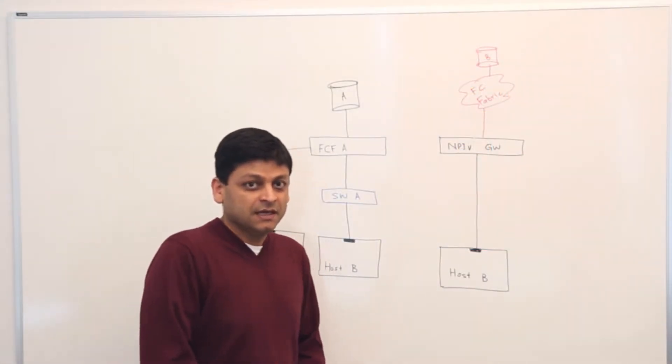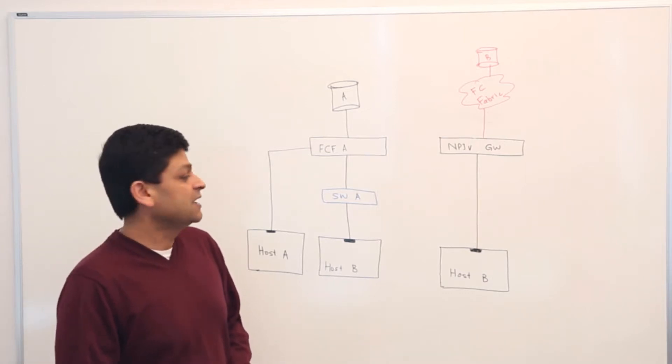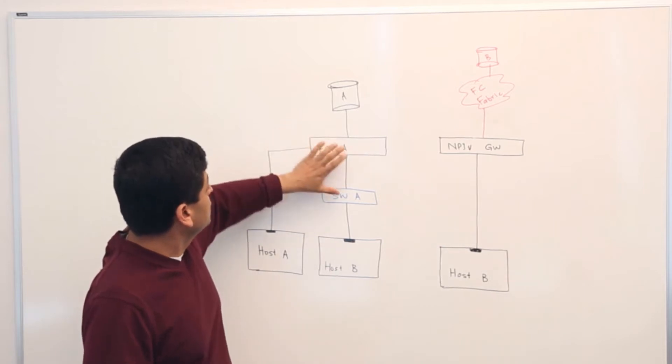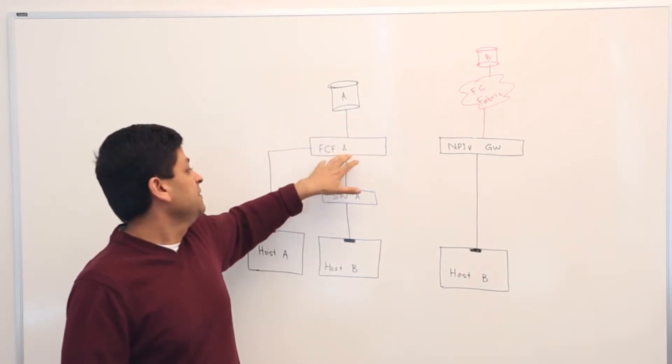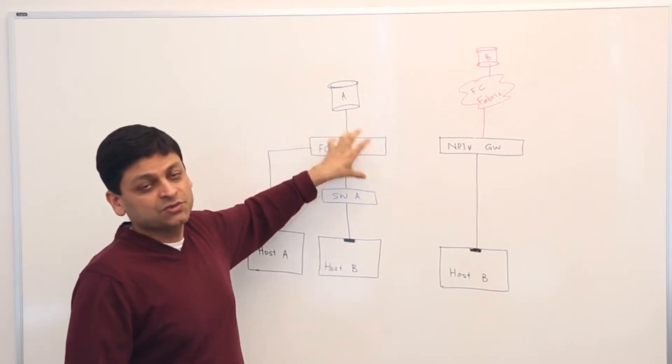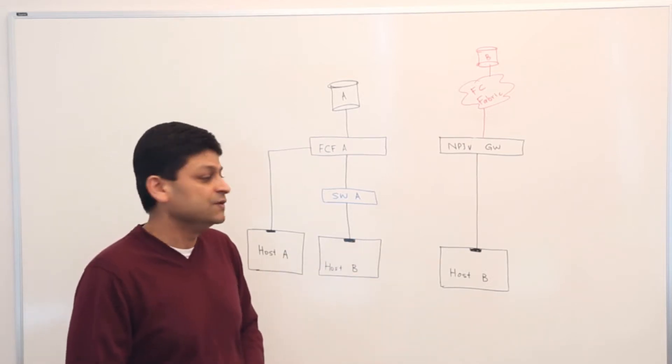So what is FCoE? As you can see here, we have a typical network diagram of an FCoE network. Here you have a switch, which is typically known as an FCF, which consists of Ethernet. It's an Ethernet switch which provides fiber channel services, as we mentioned in some of the previous videos.